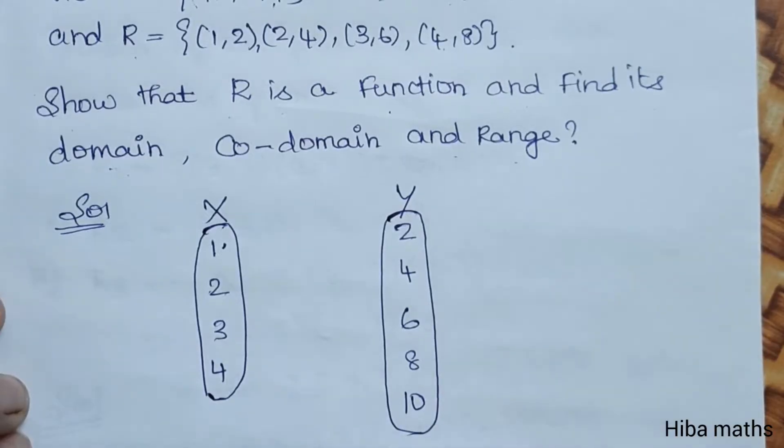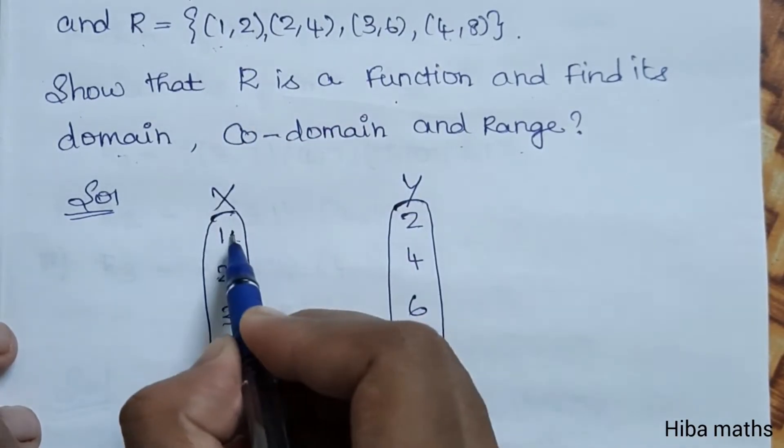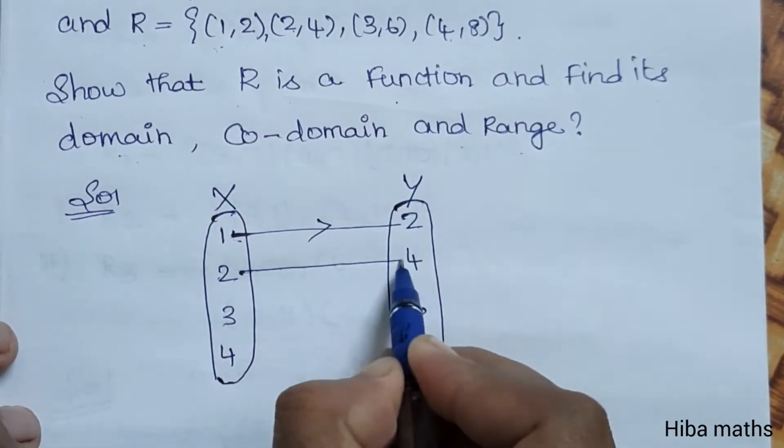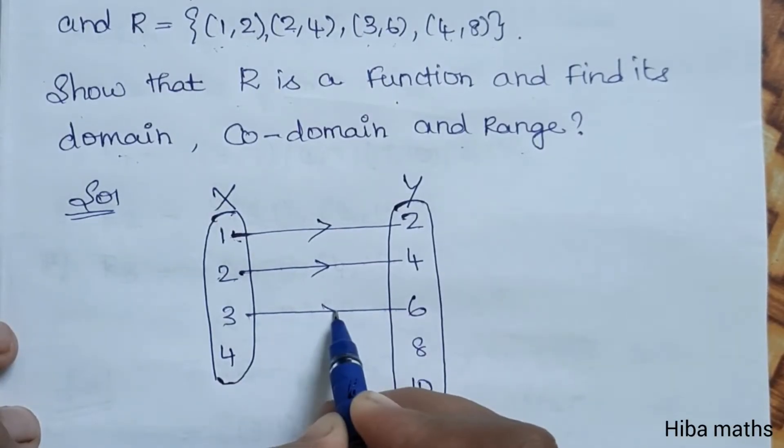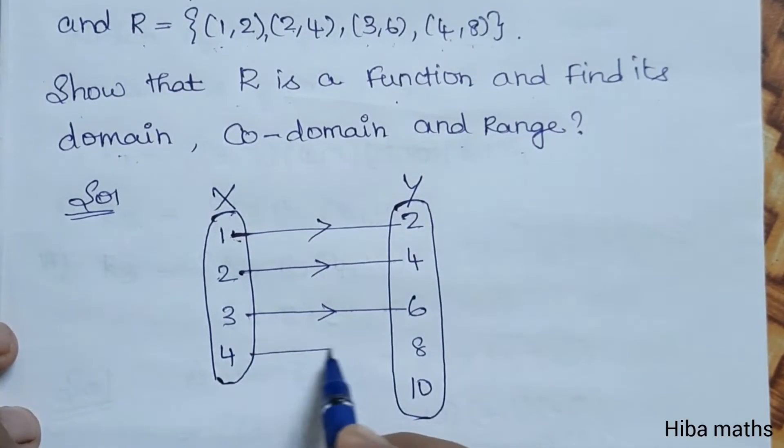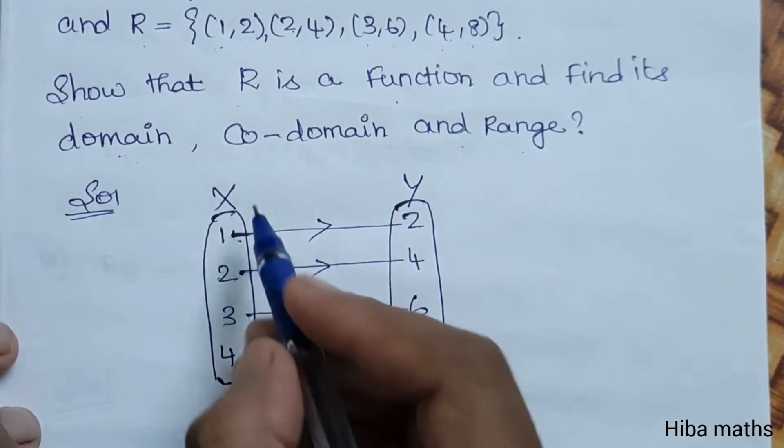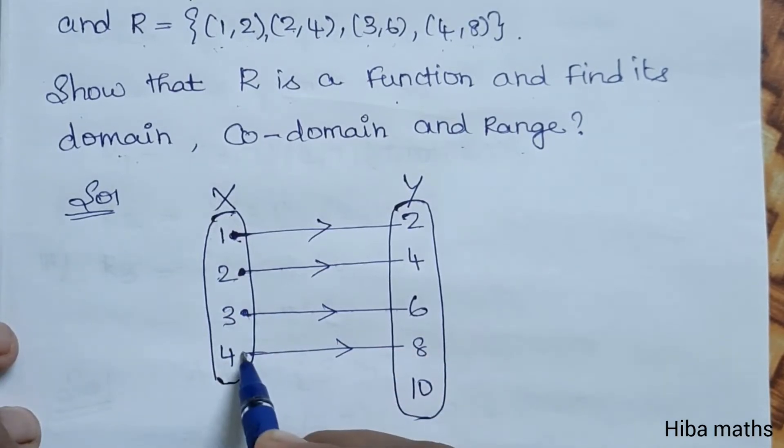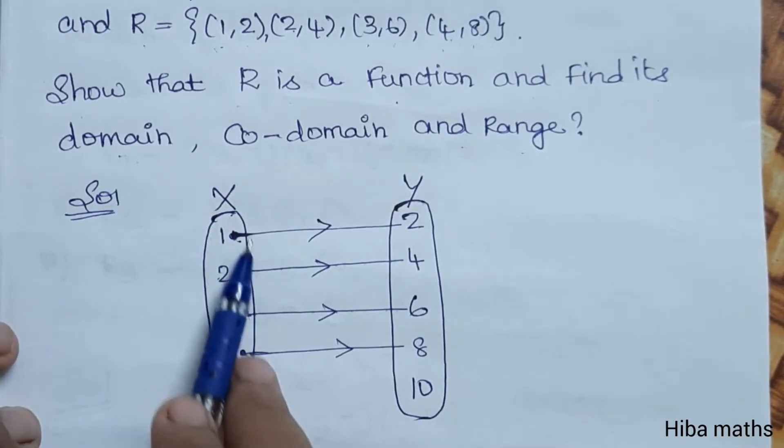To plot the arrow diagram: 1,2 is (1,2); 2,4 is (2,4); 3,6 is (3,6); 4,8 is (4,8).